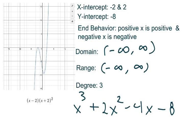Although our function is factored, once distributed, we end up with a degree of 3. Keep in mind that all functions with an odd degree will result in a similar end behavior.